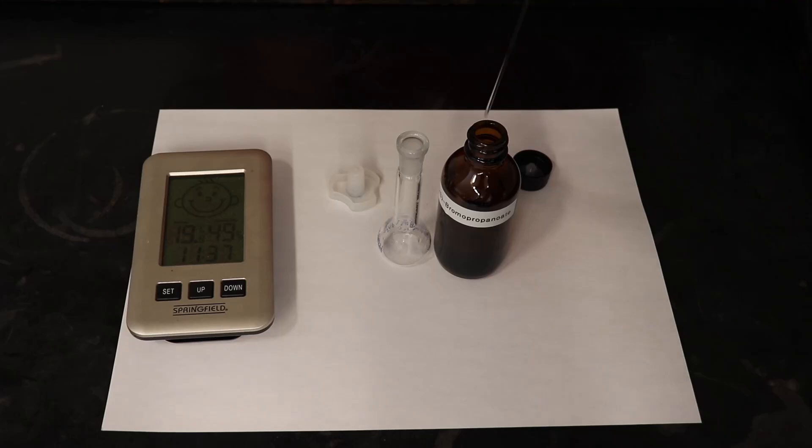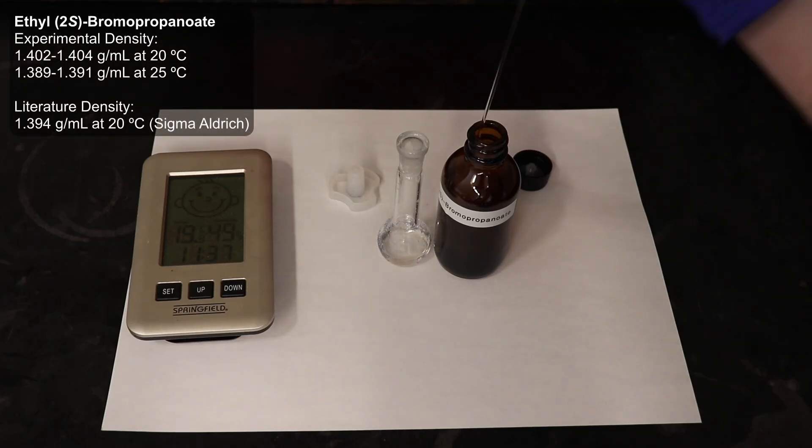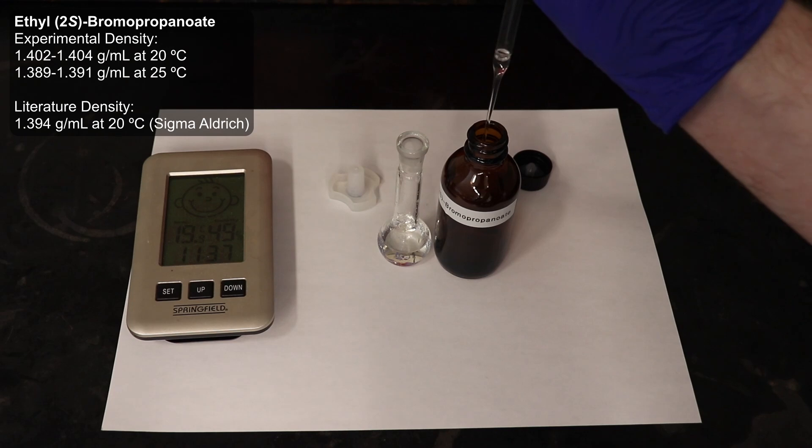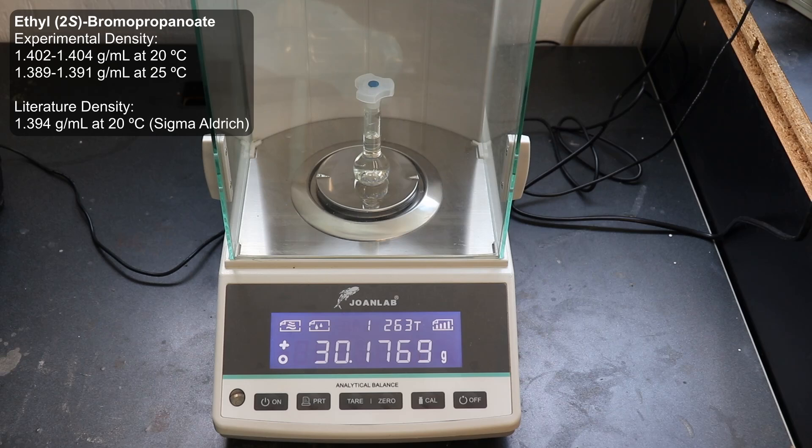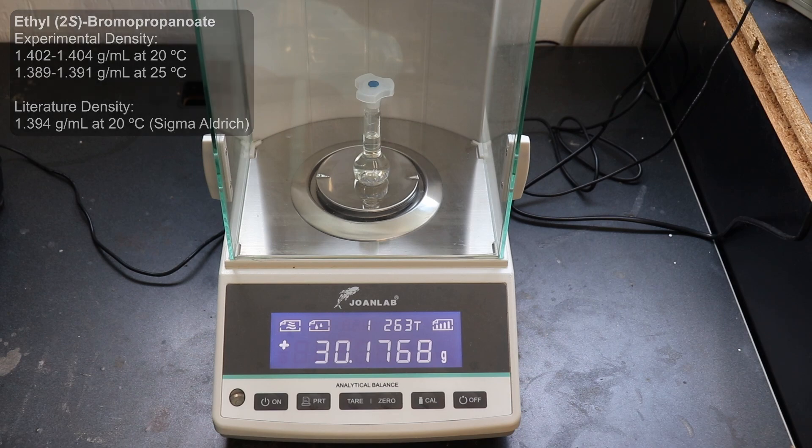I also took a rough measurement of the specific gravity using a 10 mL volumetric flask, finding it to be 1.402 to 1.404 grams per milliliter at 20 degrees Celsius, closely aligned with the 1.394 grams per mL reported by Sigma.